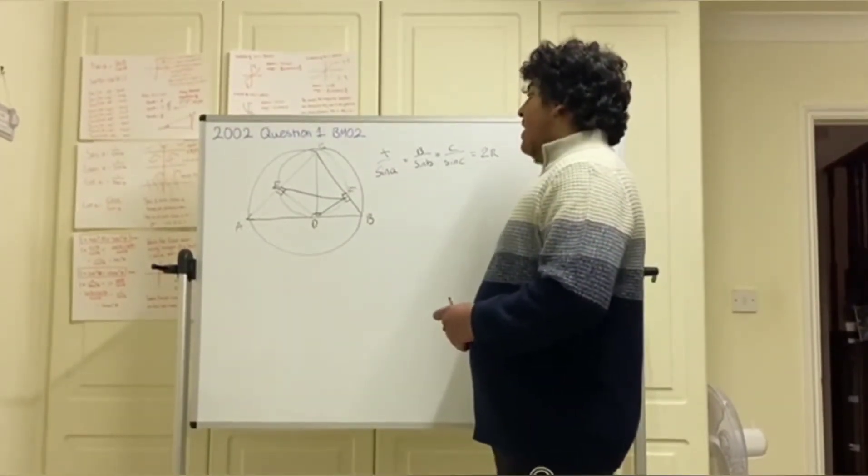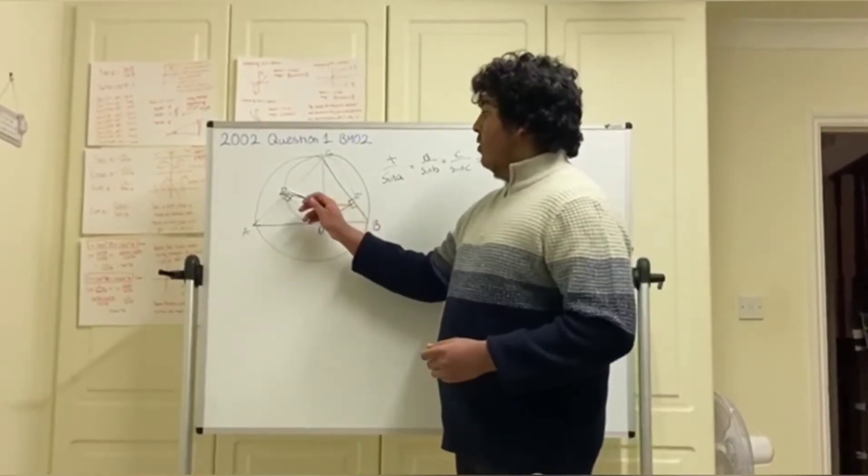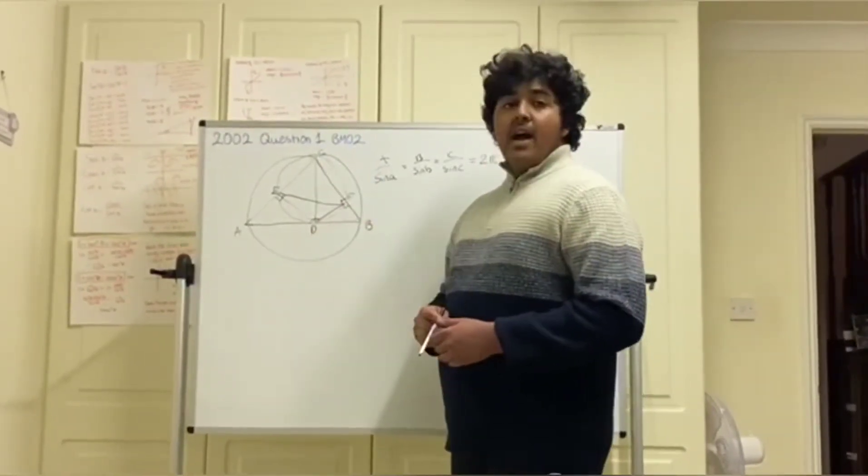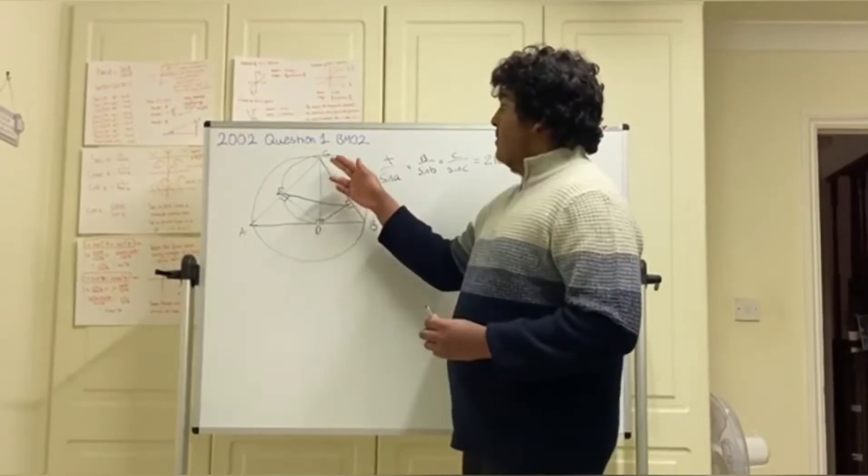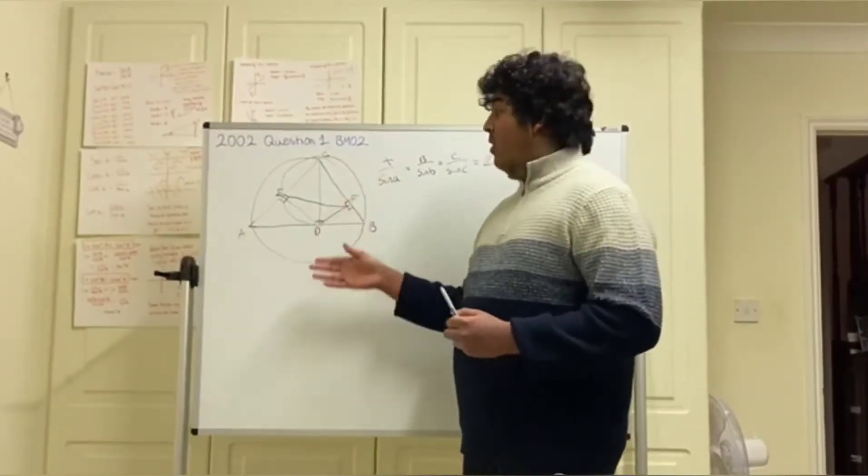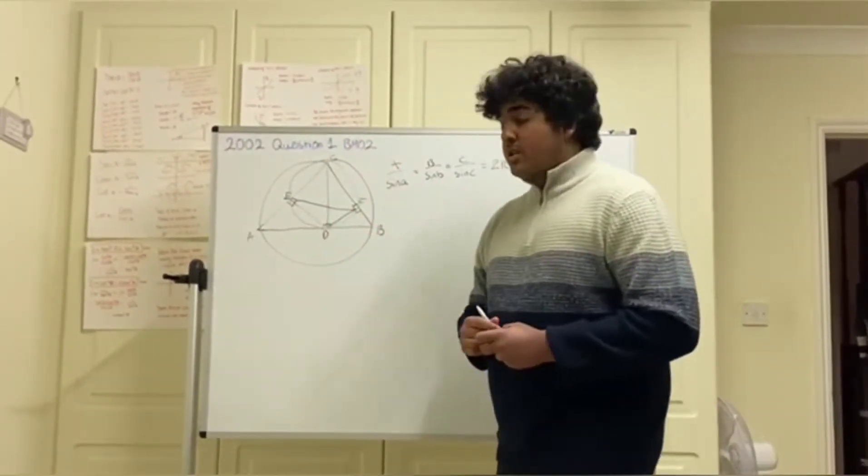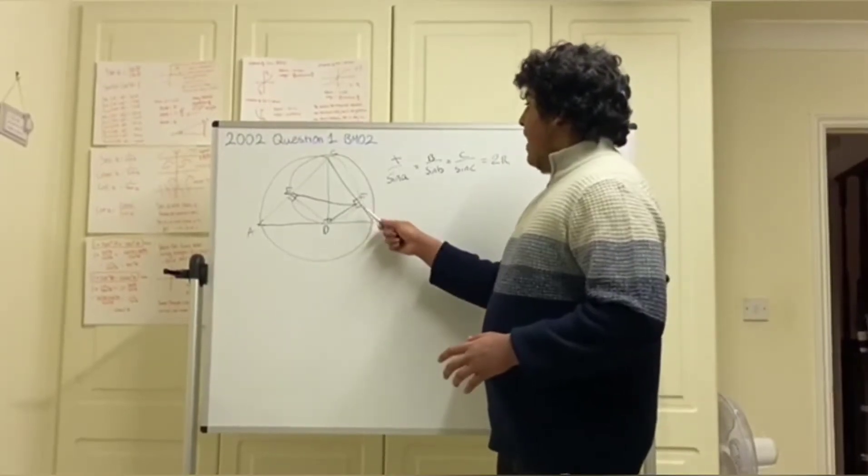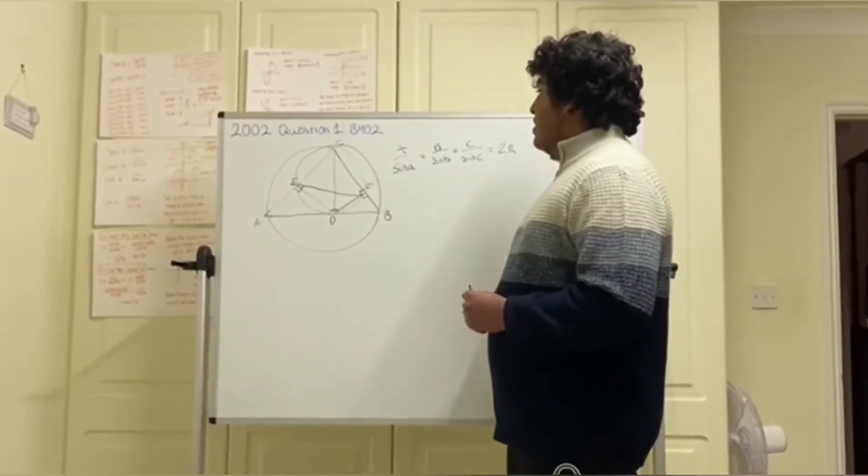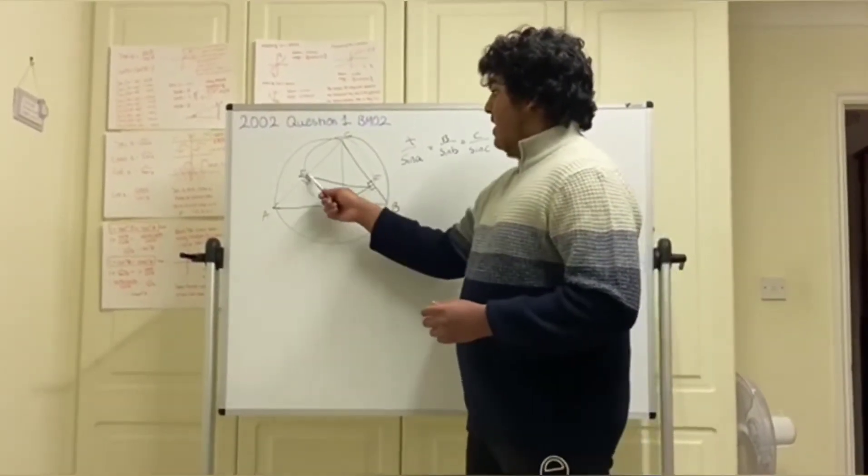This means that we can form the triangle EFC as a triangle which has a diameter, sorry, a triangle in a circle with a diameter CD, which means that we can use our extended sine rule to try and find the value of EF.